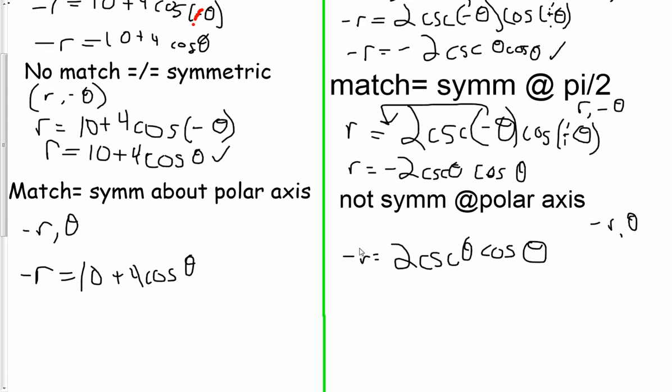And the last one, you just plug the negative r in on the left. Negative r theta is your substitute. And it doesn't match, right? So not matched at pole.